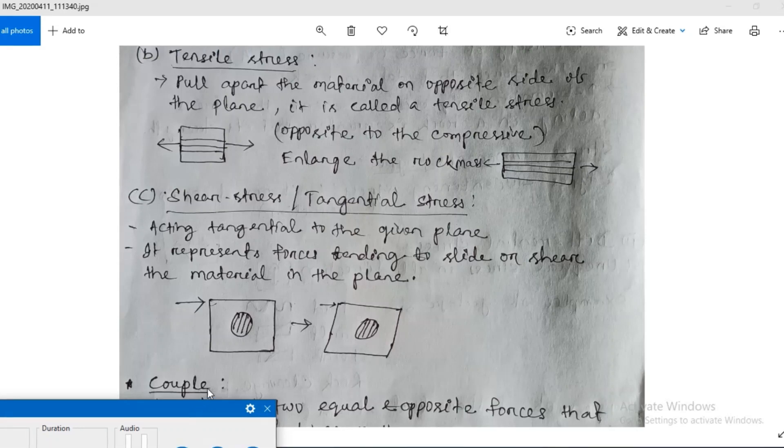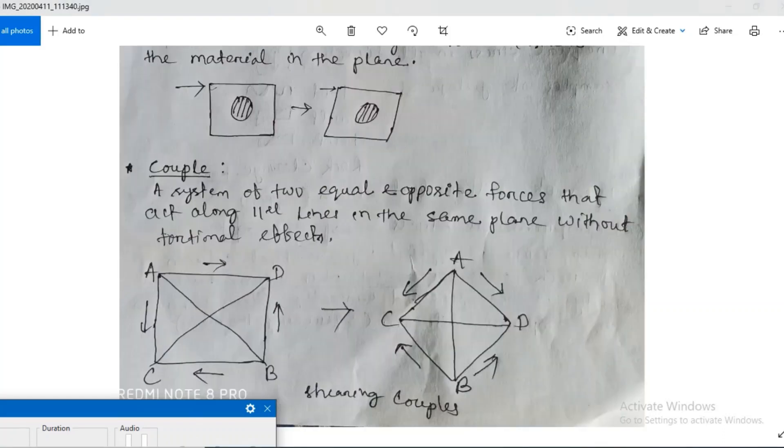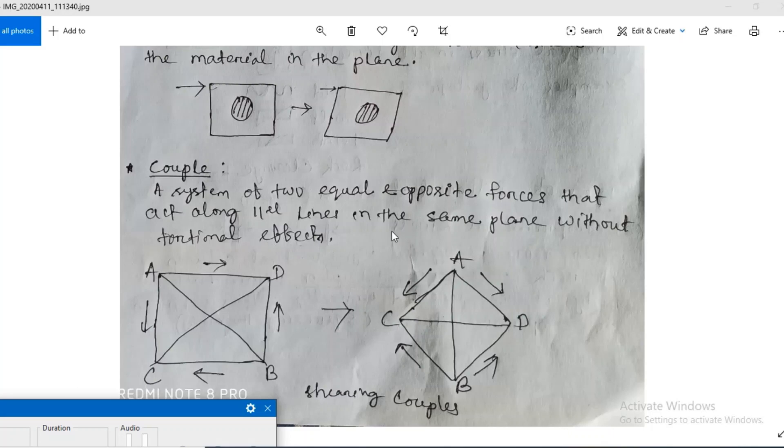Couple stress. A system of two equal and opposite forces that act along parallel lines in the same plane without torsional effects.